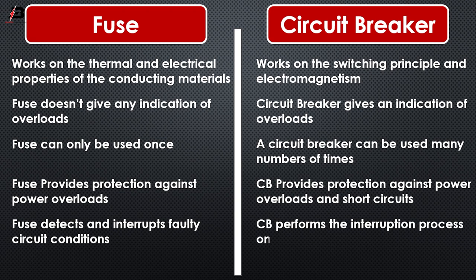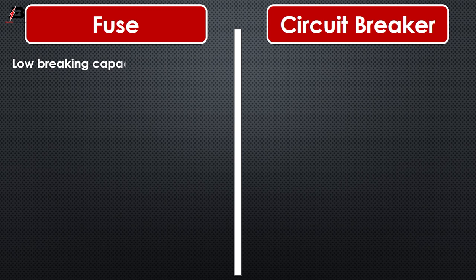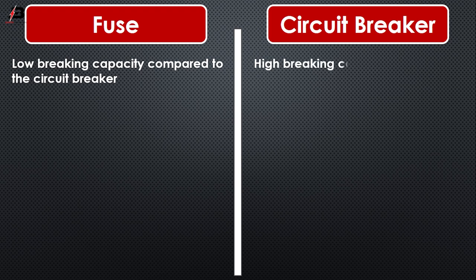A fuse detects and interrupts faulty circuit conditions, whereas a circuit breaker performs the interruption process only after faults are detected by a relay system. A fuse has low braking capacity compared to the circuit breaker, whereas the circuit breaker has high braking capacity compared to the fuse.